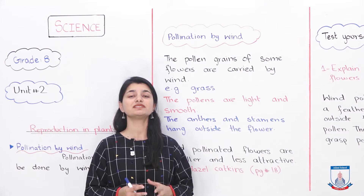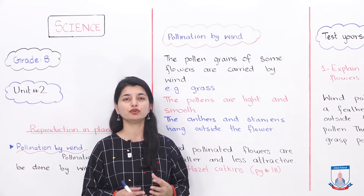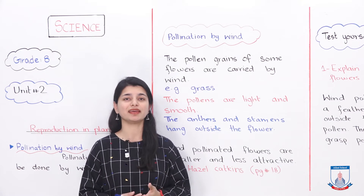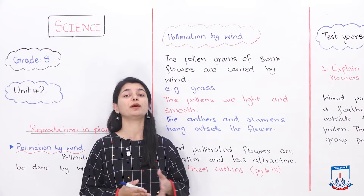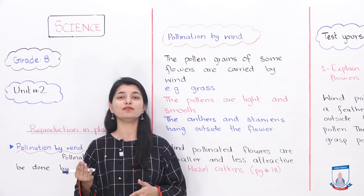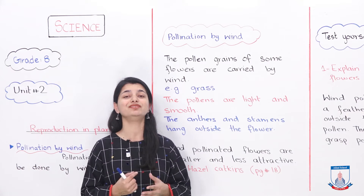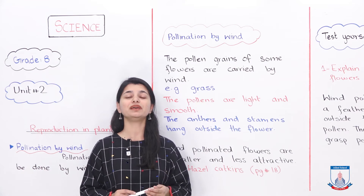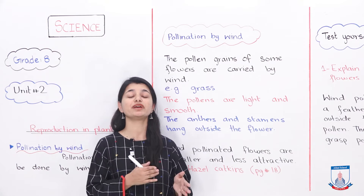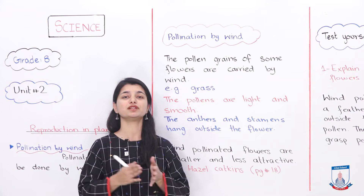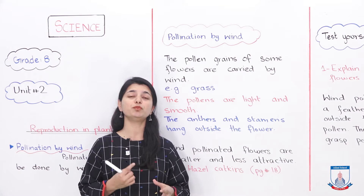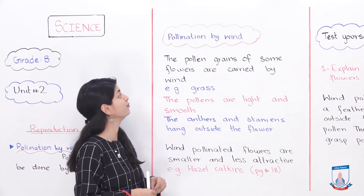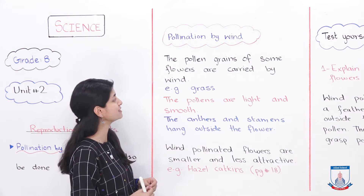As we know, the pollen grains of some flowers are carried by wind. The purpose of carrying them is to reach those pollen grains to the stigma, so they can then travel down to the ovule and fertilize with it. From this a seed forms and a new plant grows. Some pollen grains are carried by insects, but there are also pollen grains carried by wind.